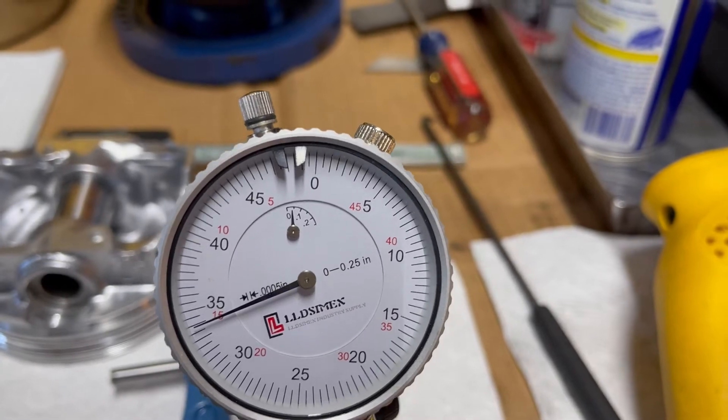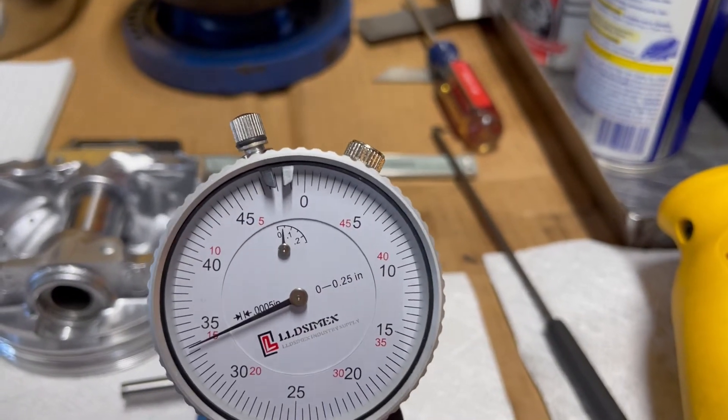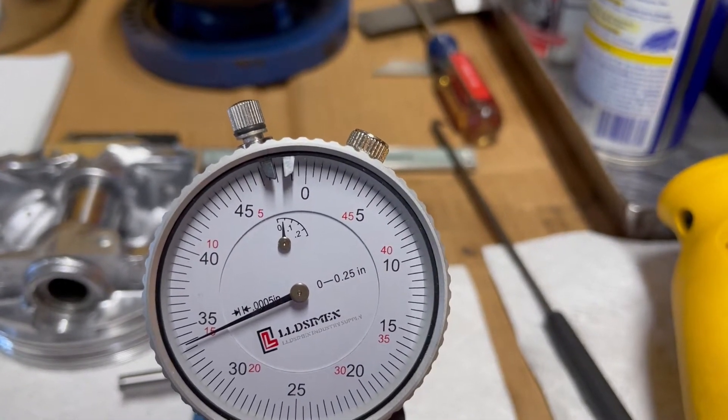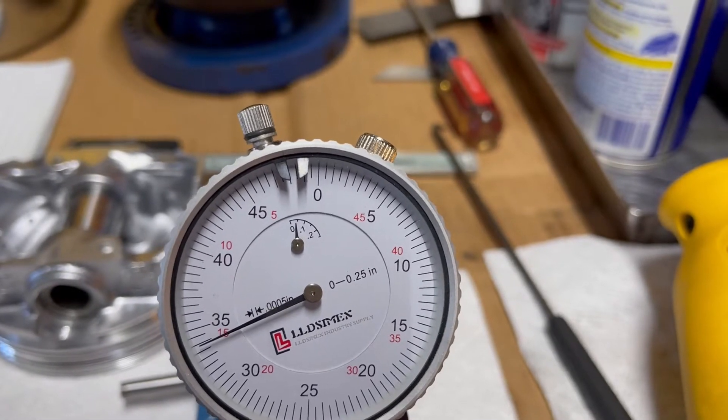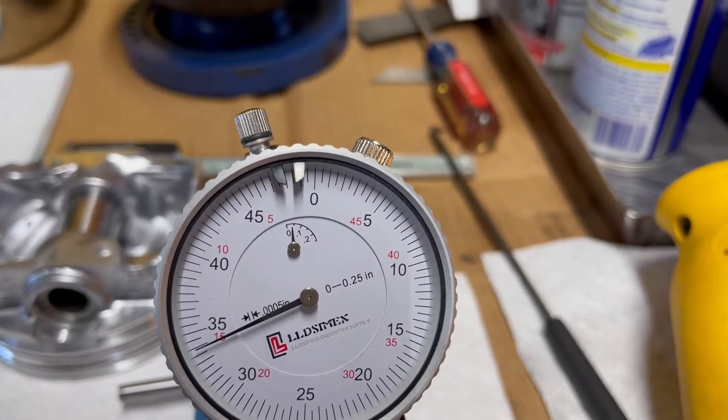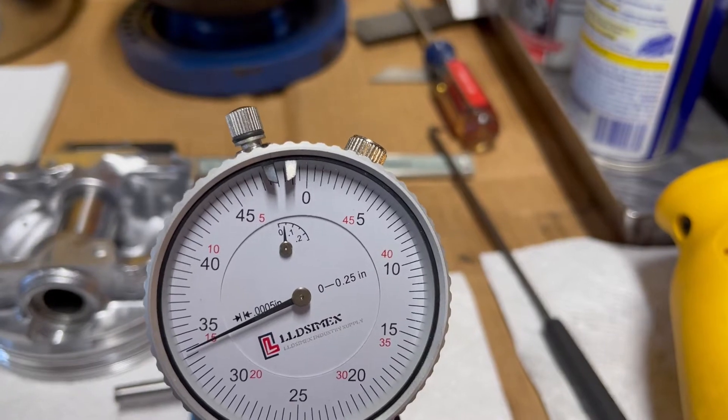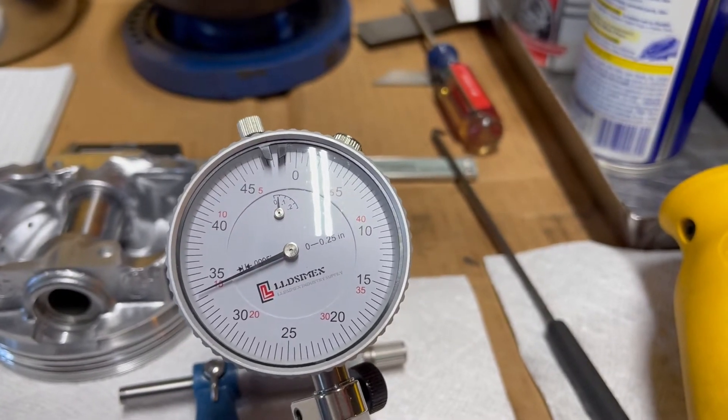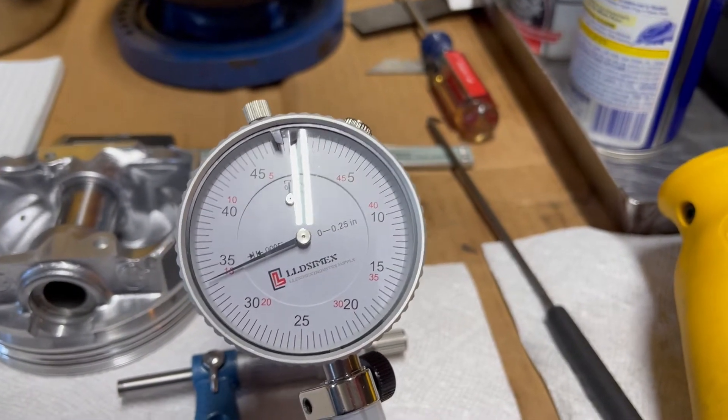So I put it to the left there. Each one of those ticks is half a thousandth. So I'm at one and a half to two thousandths. I don't know if you can see it because of the shadow there.